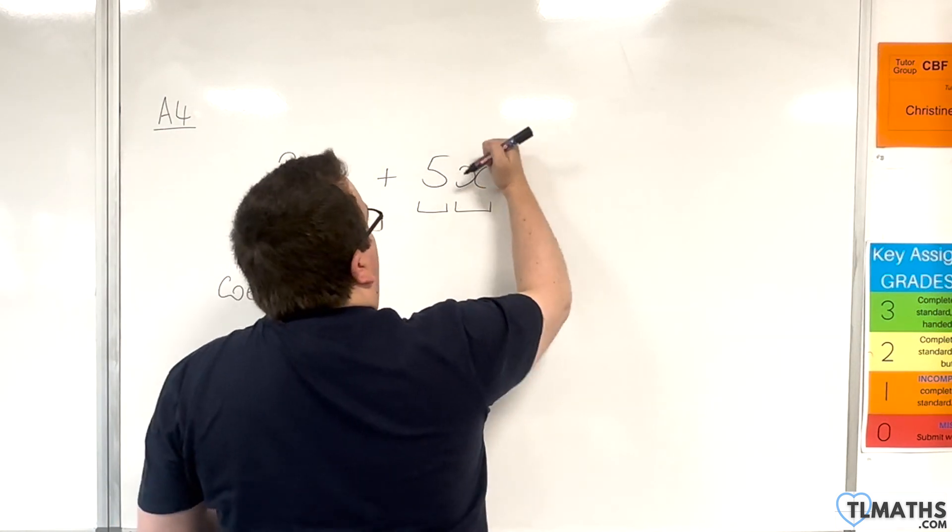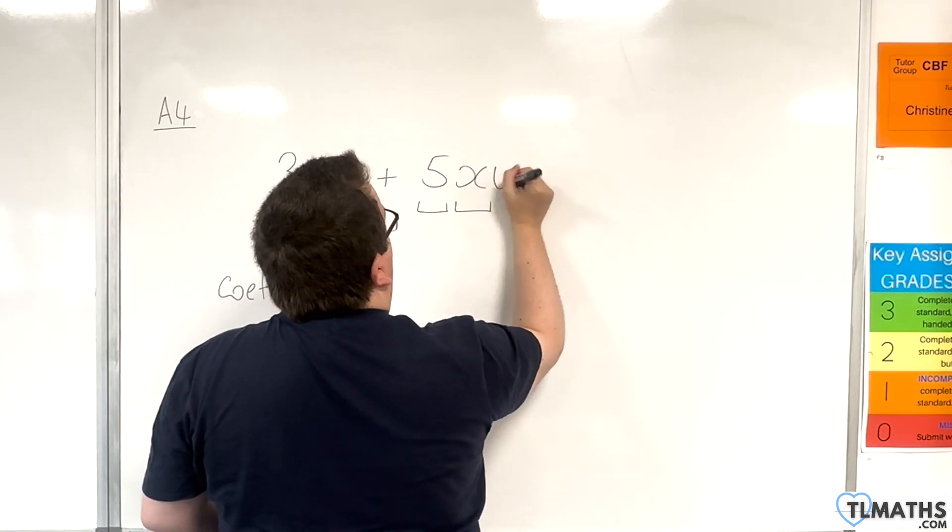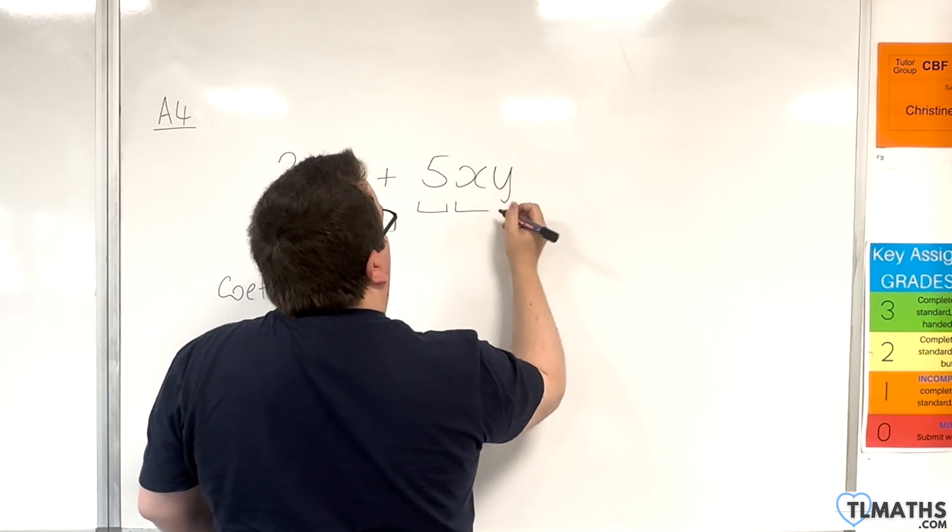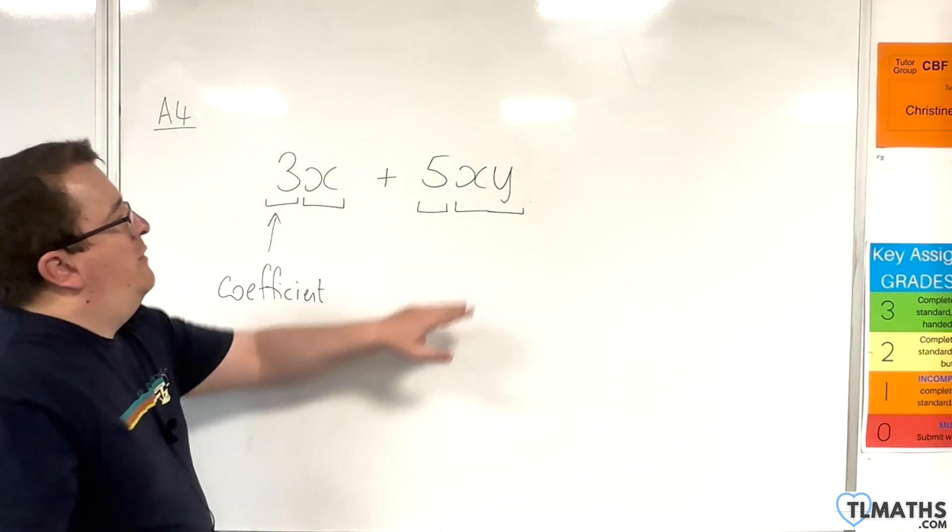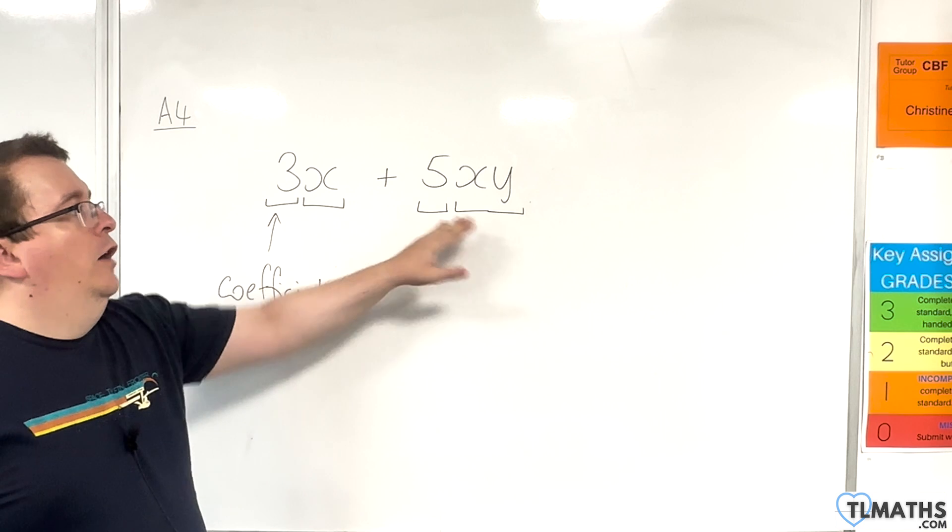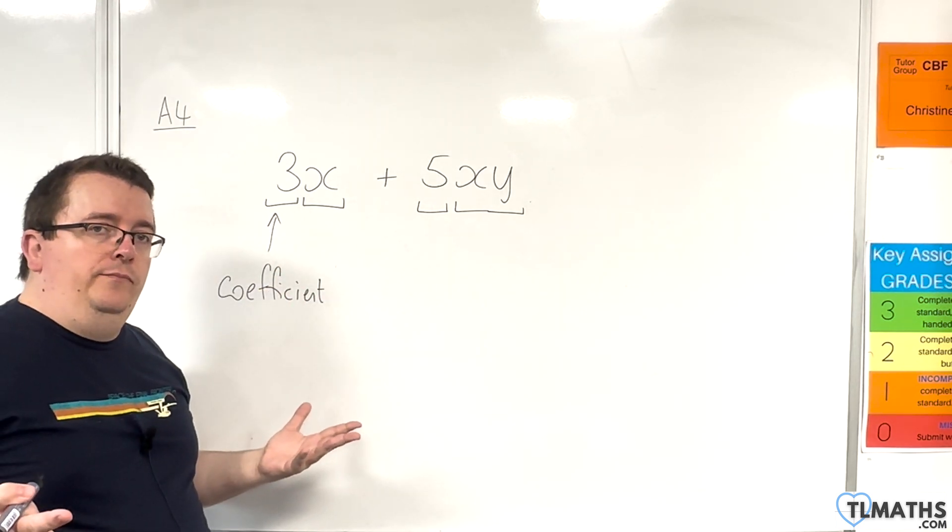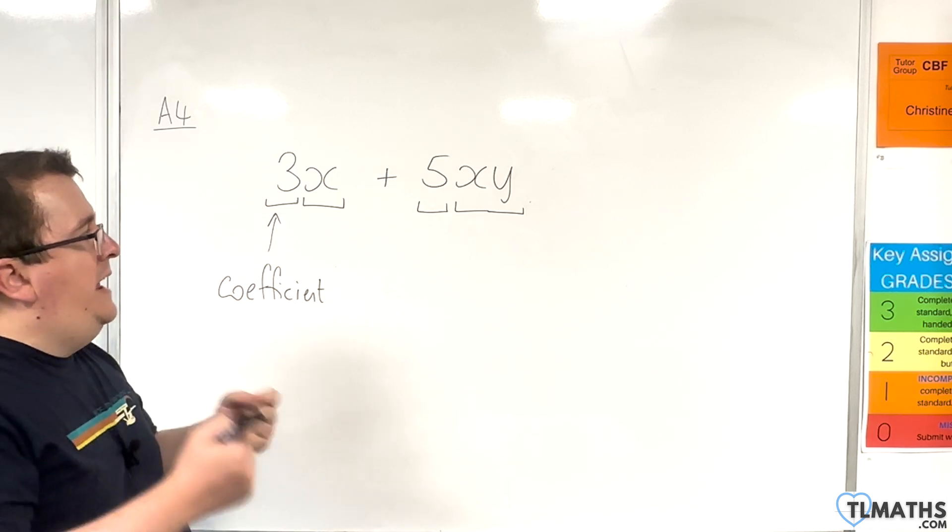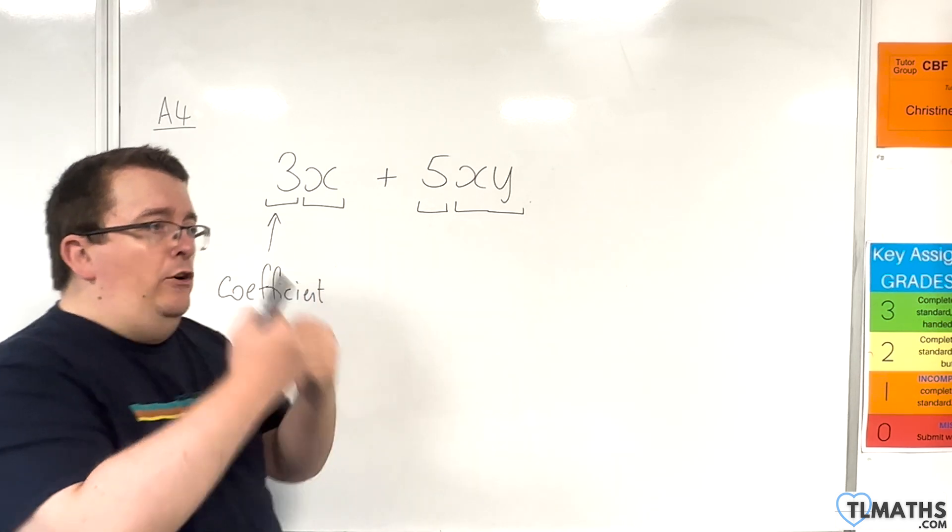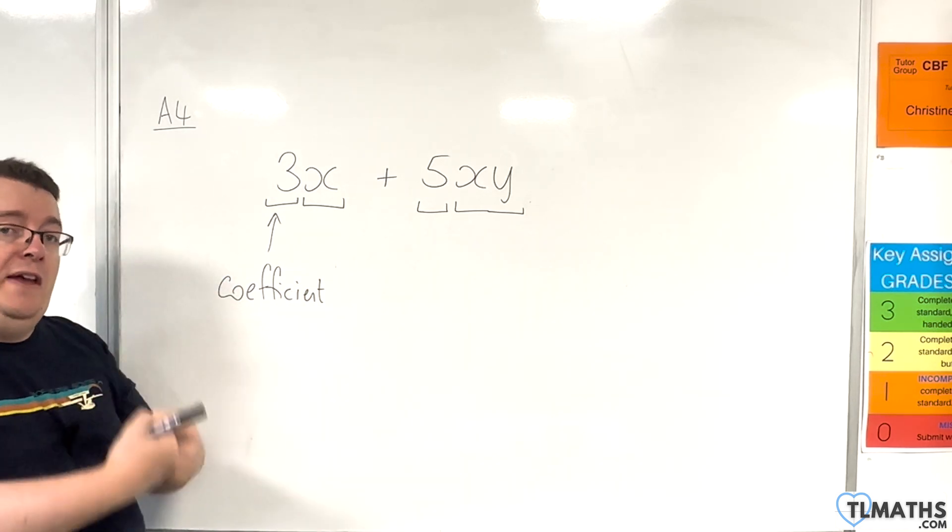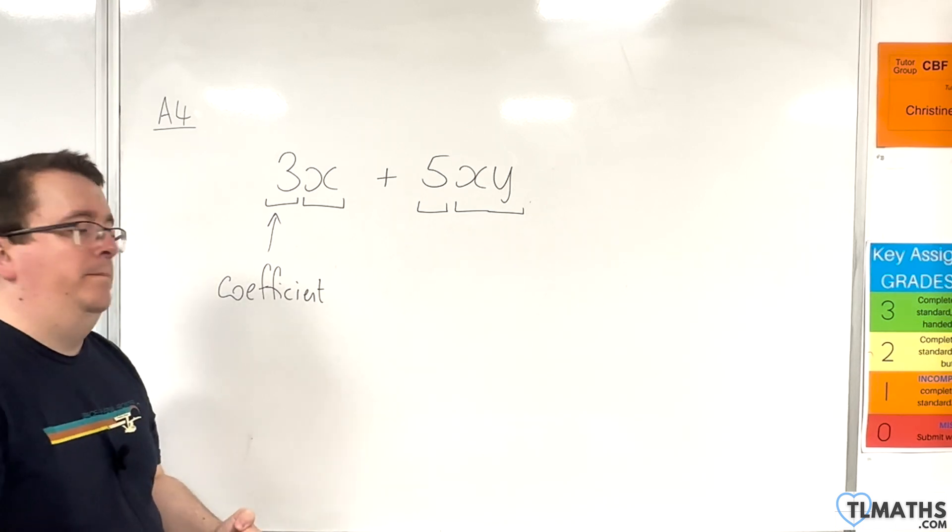Likewise, I could change this to 5xy. So the algebra bit here is now xy. Over here, it's x, so they're different. So you can't combine them. So the key thing here is that the algebra bit has to be the same in order for you to be able to combine them.